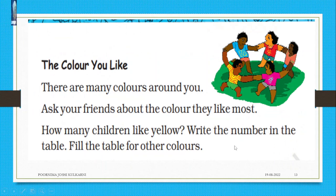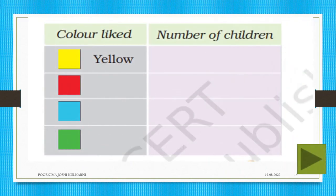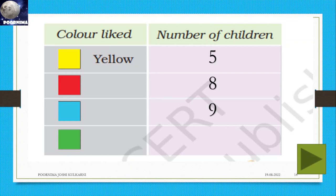Color you like. Ask all of your friends which color is their favorite. There are many colors around you. Ask your friends about the color they like the most. Fill the table for the other colors. Yellow — five students; red — eight; blue — nine students; green — fifteen students.